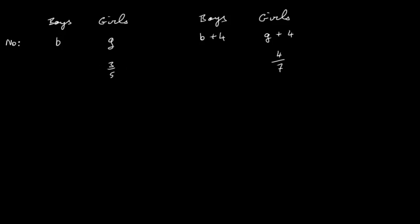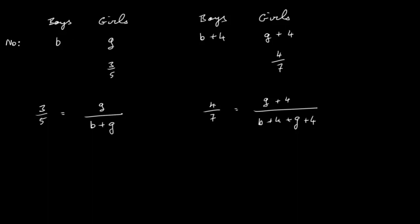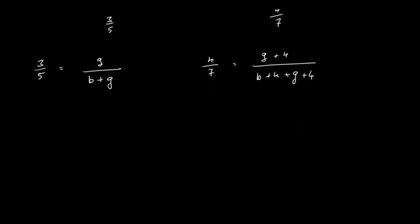Three-fifths is worked out by taking the number of girls divided by the total: G divided by (B + G). The four-sevenths is the proportion of girls after new students join: (G + 4) divided by (B + 4 + G + 4). These are our two equations. Cross-multiplying the first gives 3B + 3G = 5G, which simplifies to 3B − 2G = 0. This is equation one.